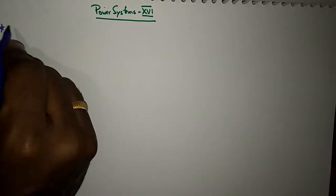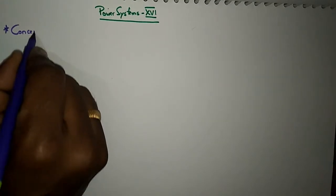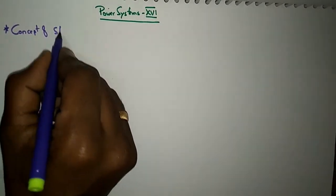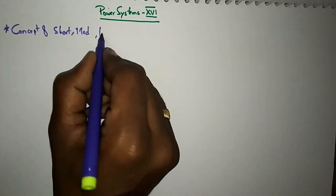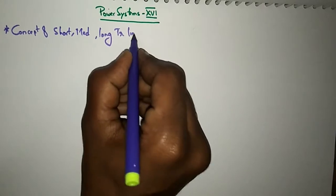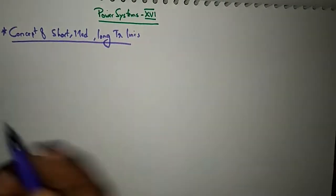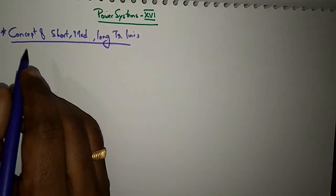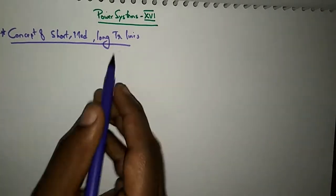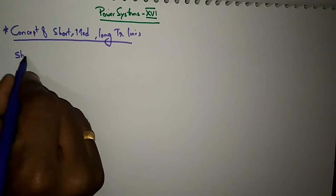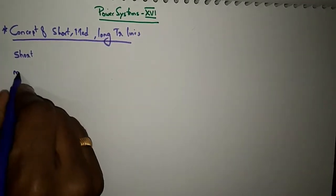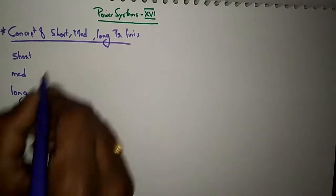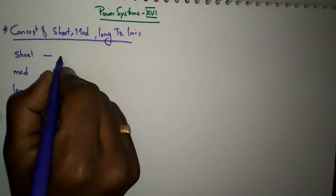Today we are going to deal with power systems part 16, which is the concept of short, medium, and long transmission lines. A transmission line is divided into short, medium, and long categories depending upon their operating voltage and distance. Let's look at the lengths and voltages for each.